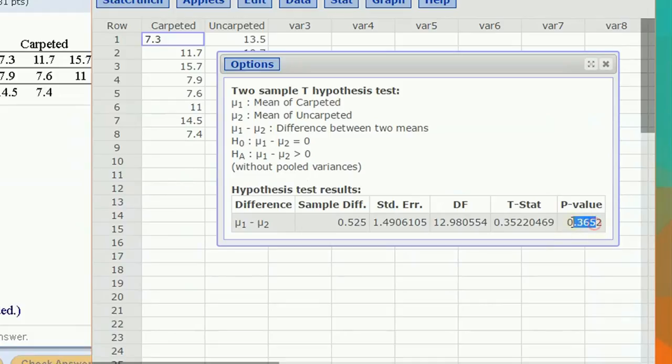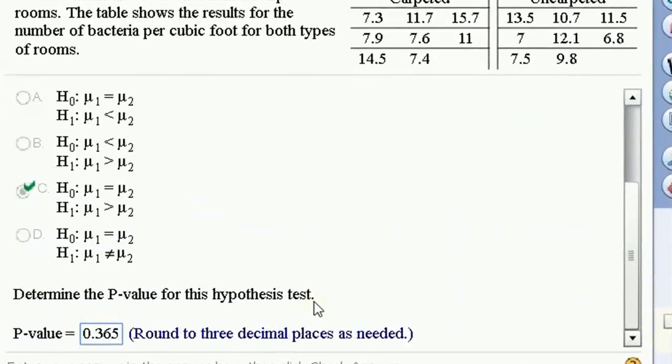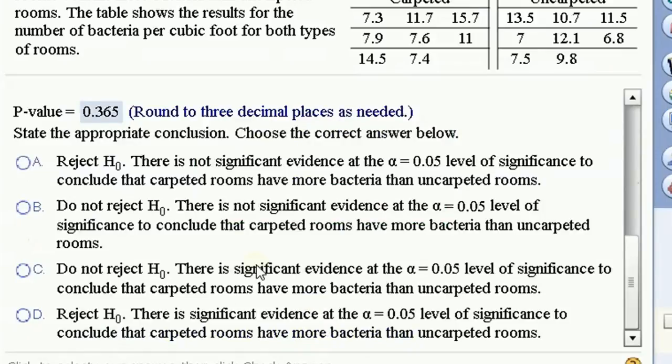P-value is pretty high, 0.365. It's certainly higher than my alpha level. A high p-value leads you to not reject the null hypothesis. So we do not reject the null. There is not sufficient evidence at the alpha of 0.05 to conclude that carpeted rooms have more bacteria.